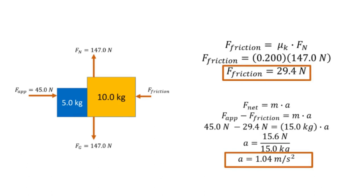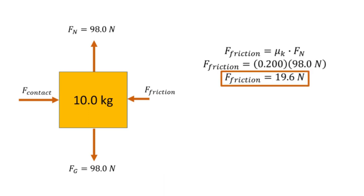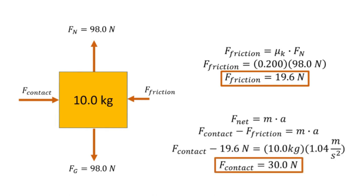Lastly, we determine the friction force affecting our 10-kilogram box. We write: friction equals coefficient of kinetic friction times the normal force, giving us 19.6 newtons. To solve for the contact force, we use Newton's Second Law: the horizontal net force equals contact force minus friction force equals mass times acceleration. Substituting 19.6 newtons friction, 10 kilograms mass, and 1.04 meters per square second acceleration, we get a contact force of 30 newtons.